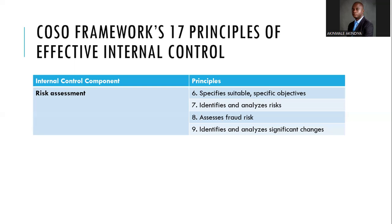Principle nine: identify and analyze significant changes. Changes can overturn an organization — your product, technology, or services can become obsolete. There is product obsolescence, technology obsolescence, and service obsolescence. You need to watch your external and internal environment. Organizational change management is a field of study on its own, and organizations should respond to changes in the external and internal environment.